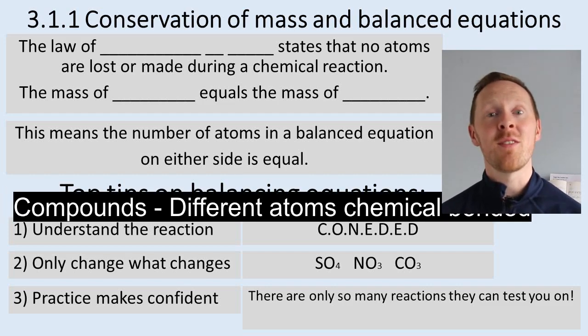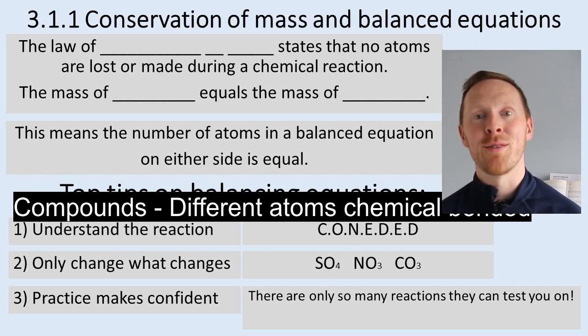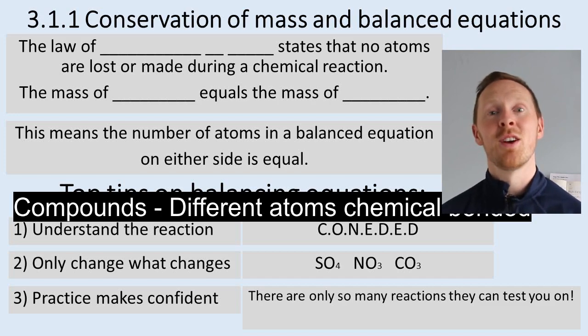Compounds refer to different atoms which are chemically bonded. We talk about them in terms of when we talk about ionic compounds, like sodium chloride, lithium fluoride, calcium oxide. They're all ionic compounds because they're made up of different atoms bonded together.